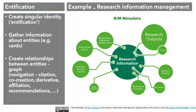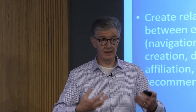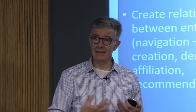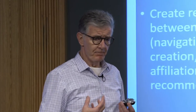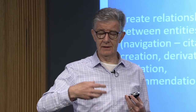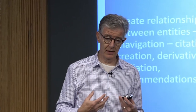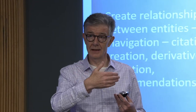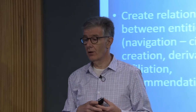An example is research information management. This has become very important in a variety of university settings, of variable interest across different countries depending on the research environment. But it has emerged as a very important area. There are now a variety of commercial systems that support this area, some open source activity, some other activity. Research information management is about managing the research outputs, the research practices, and behaviors of an institution — to support things like expertise profiles, faculty activity reporting, and various other aspects of that research workflow.